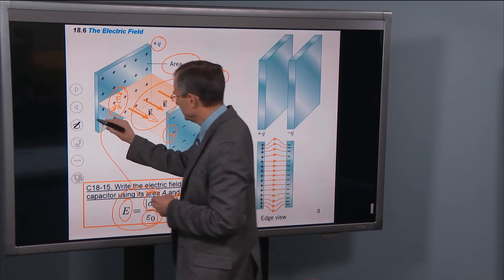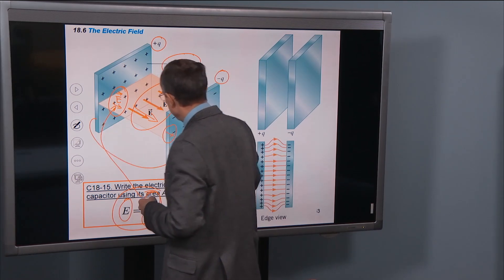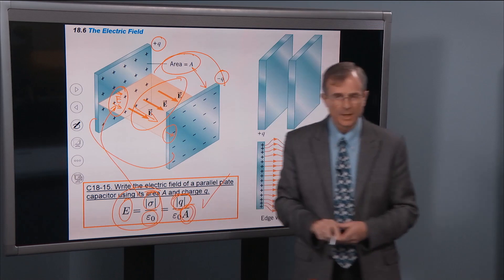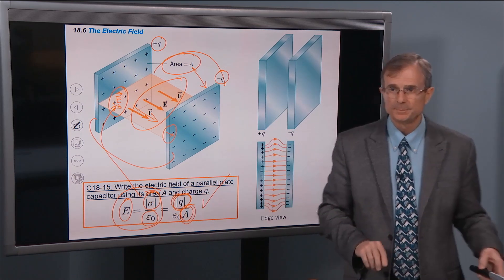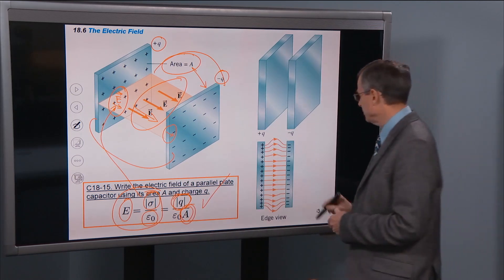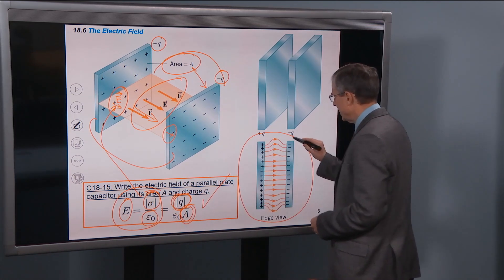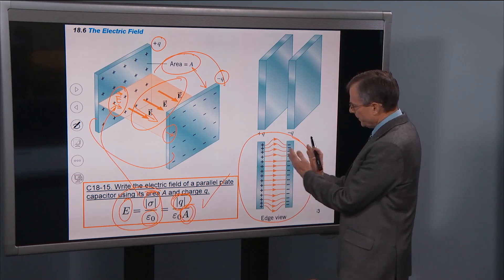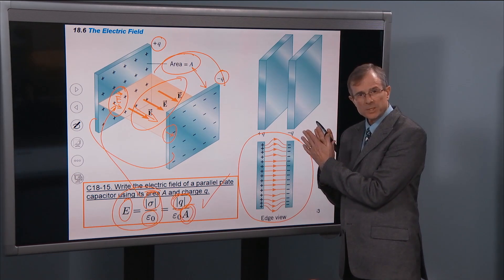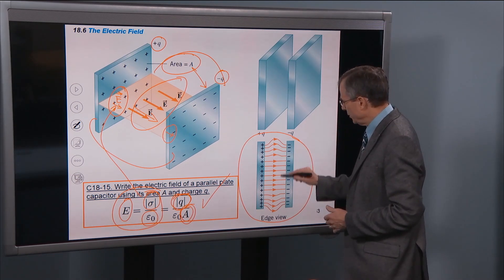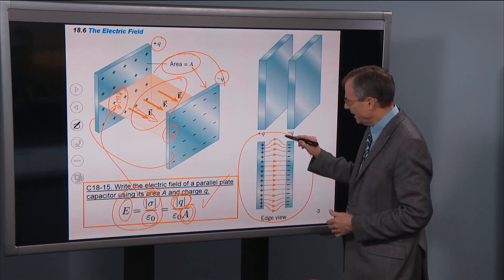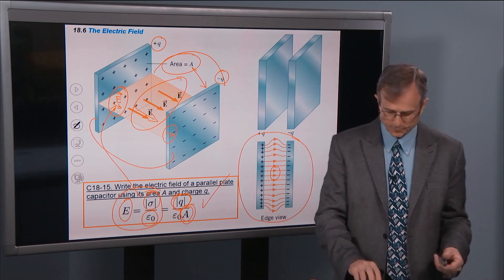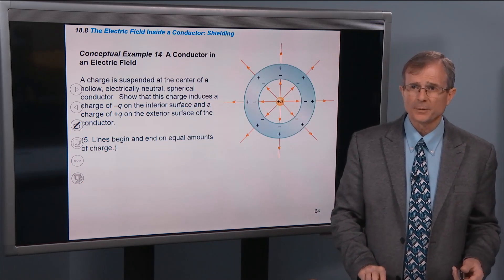There's some fringing near the edges — we'll talk about that later. But near the center, in the edge view, if the plates are close together and you're far from the edges, you get a pretty uniform electric field.